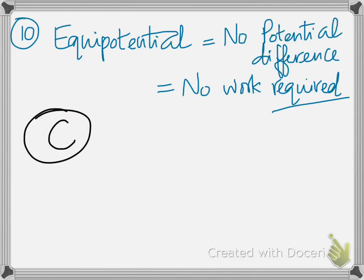Number 10. By the definition of an equipotential surface, the potential is equal at all points. That means there is no potential difference, which means there is no work required to move any type of charge from one point to the other. This is simply the definition of potential difference.